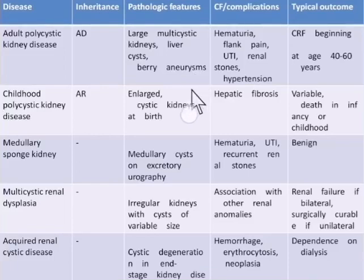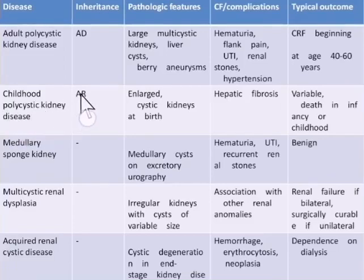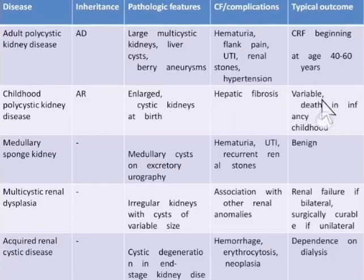The second cystic disease is childhood polycystic kidney disease, also called autosomal recessive polycystic kidney disease. The kidneys are enlarged with multiple cysts, usually present at birth. It is also associated with hepatic fibrosis. The outcome is variable, but usually death occurs in infancy or childhood due to renal failure.